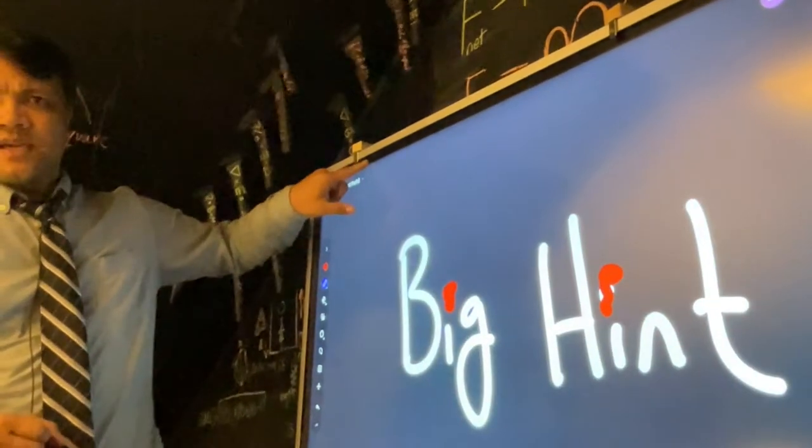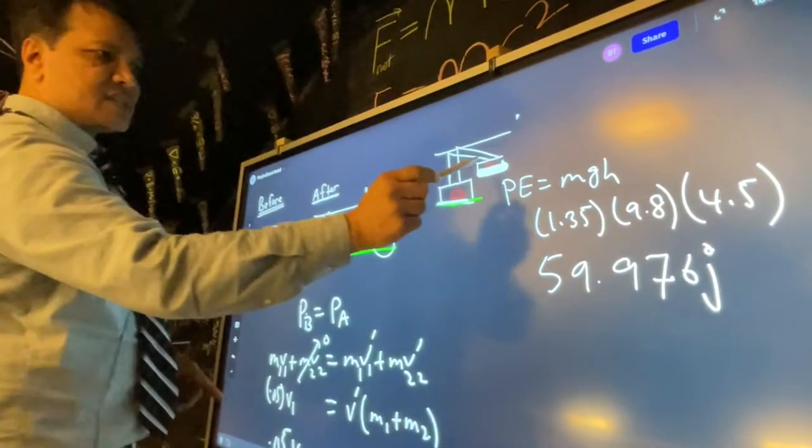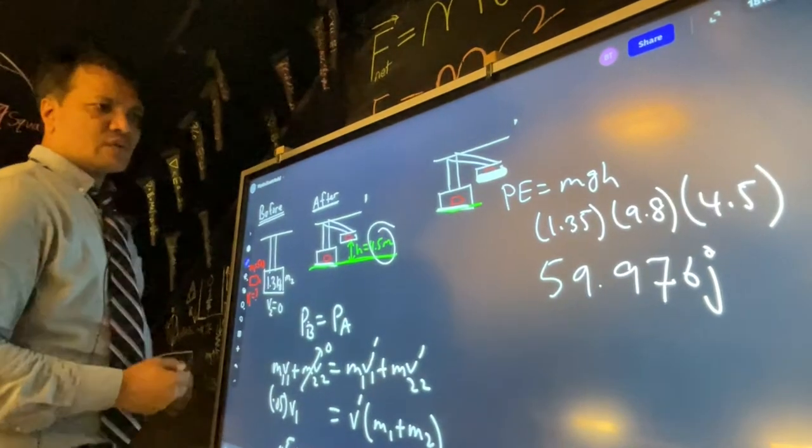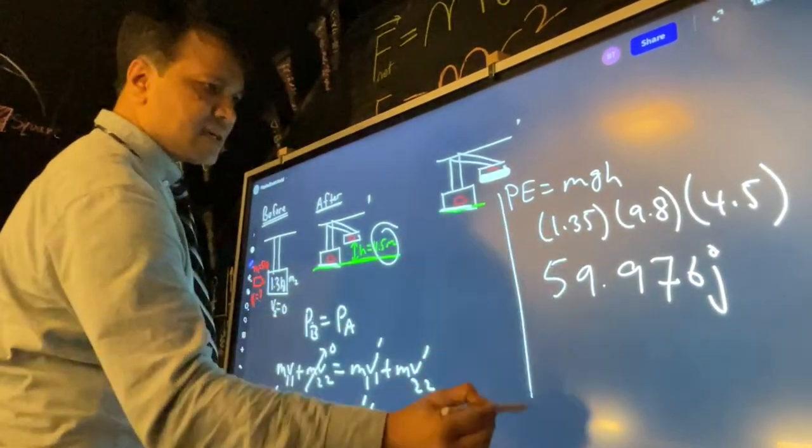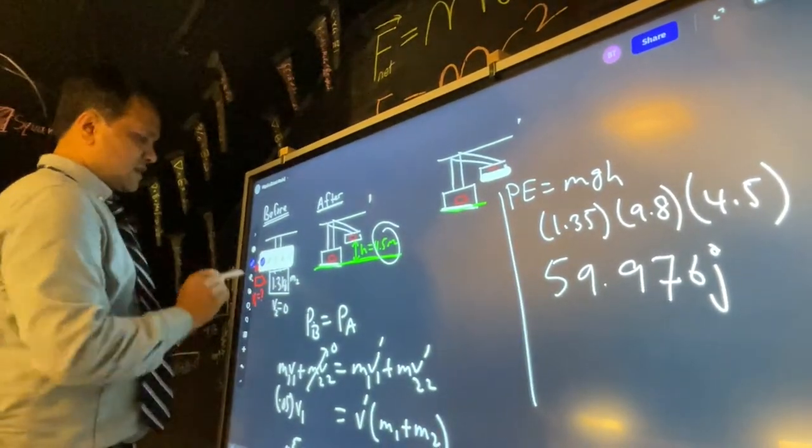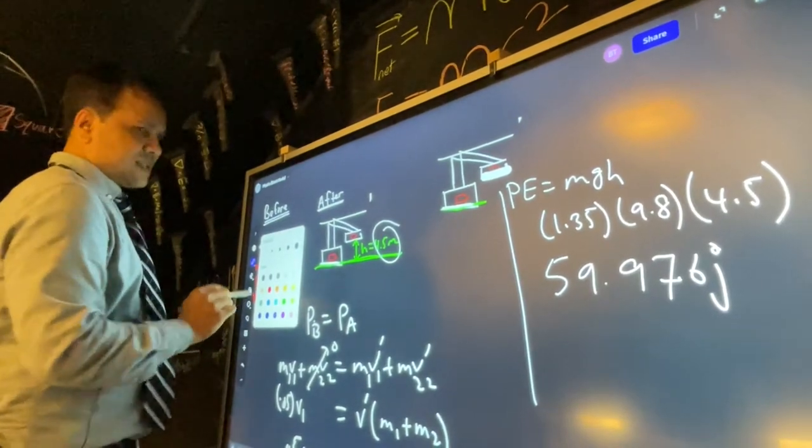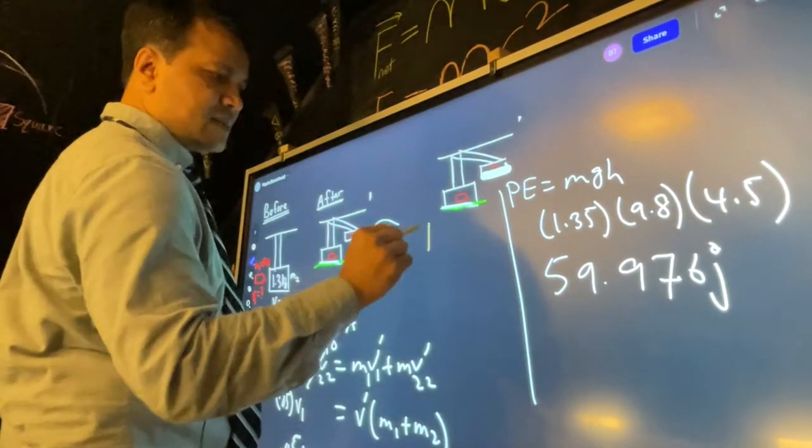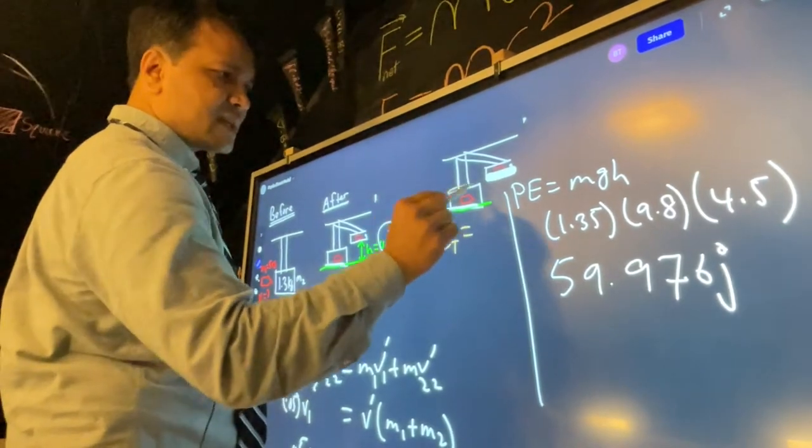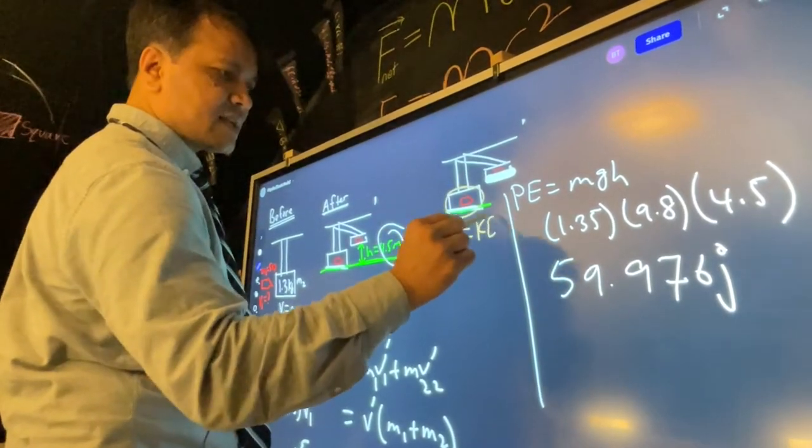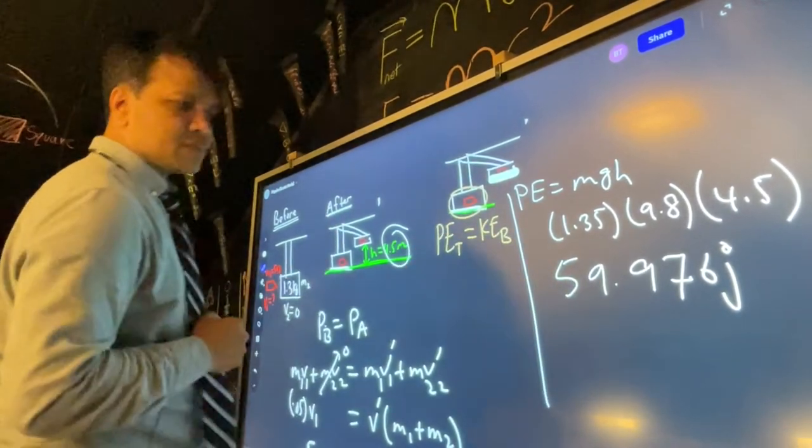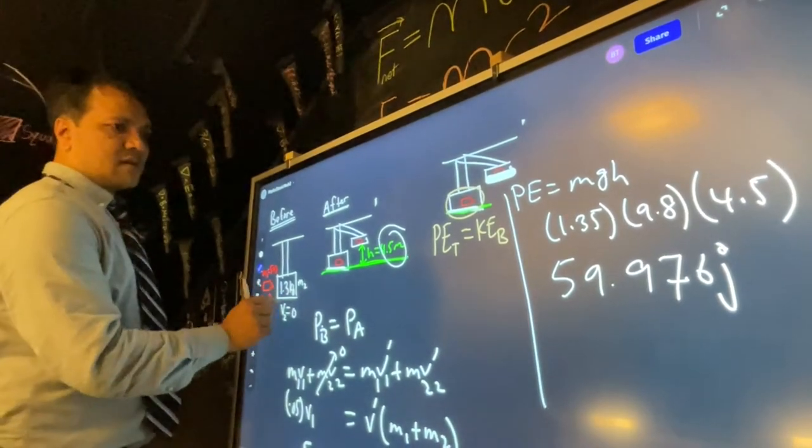In this video I'm going to give you the big hint. We know now the potential energy over here, so now we can safely say that potential energy on the top is equal to kinetic energy right here on the bottom.